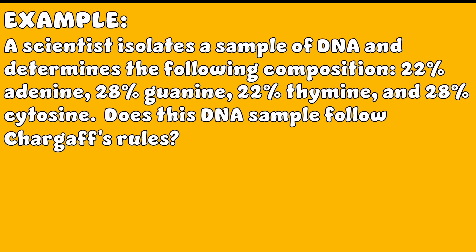Since the percentages of A and T are equal, and the percentages of C and G are equal, this sample follows Chargaff's first rule. To check his second rule, we need to ensure that the ratio of purines to pyrimidines is 1 to 1. The total percentage of purines, A plus G, is equal to 50%. Conversely, the total percentage of pyrimidines, T and C, is also 50%, which simplifies to a 1 to 1 ratio, confirming that the DNA sample also follows Chargaff's second rule.